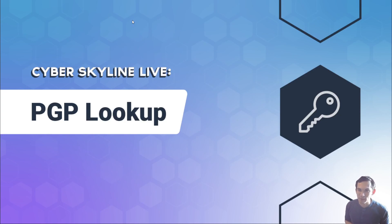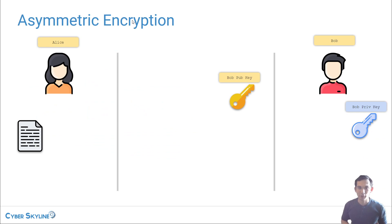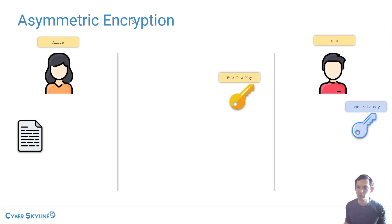Hi, I'm Franz with Cyber Skyline and today we're going to be learning how to look up PGP keys using a key server. PGP stands for Pretty Good Privacy and it's used to facilitate asymmetric key encryption. It'll be useful to get a quick overview of how asymmetric key encryption works.